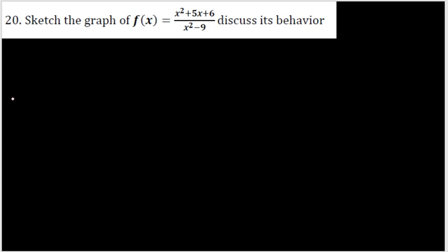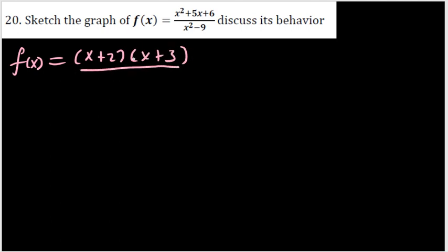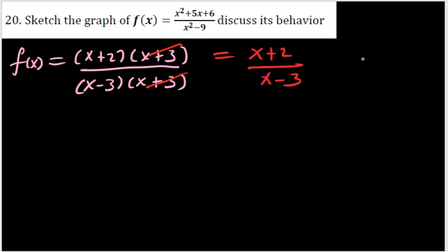Next question: sketch the graph of the given rational function and discuss its behavior. The numerator and denominator are both quadratic, so let's factorize into linear factors. The numerator factors as (x+2)(x+3) and the denominator as (x-3)(x+3) — using difference of squares for the denominator. The (x+3) terms cancel, leaving (x+2)/(x-3).